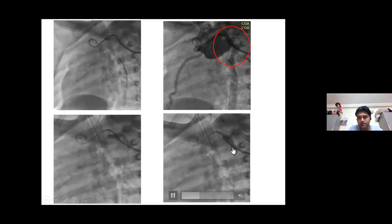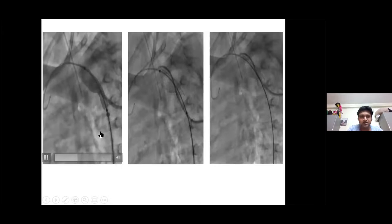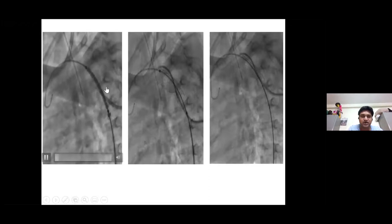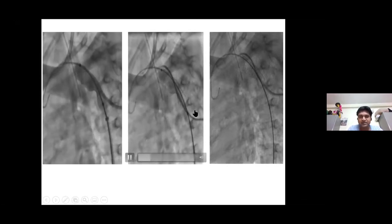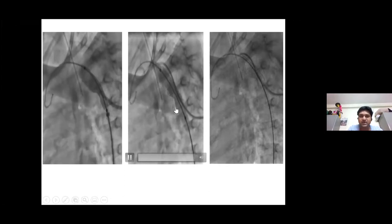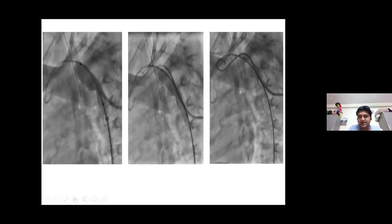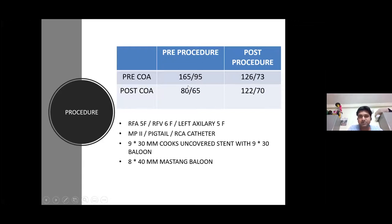Then we dilated with a 7 mm tyshak balloon. We then planned to put a 9 × 30 mm Cook Formula stent, deploying it through a 7 French braided sheath. As it was a very tight coarctation, the waist did not disappear completely with the Cook balloon, so we took a high-pressure Mustang balloon for further dilatation — deliberately an 8 mm Mustang balloon, as we wanted to keep a small waist for better anchorage. The coarctation segment was completely dilated. Initially there was almost 80 mmHg gradient, and post-procedure there was no gradient at all. So we placed a 9 × 30 mm Cook Formula stent, post-dilated with an 8 × 40 mm Mustang high-pressure balloon.